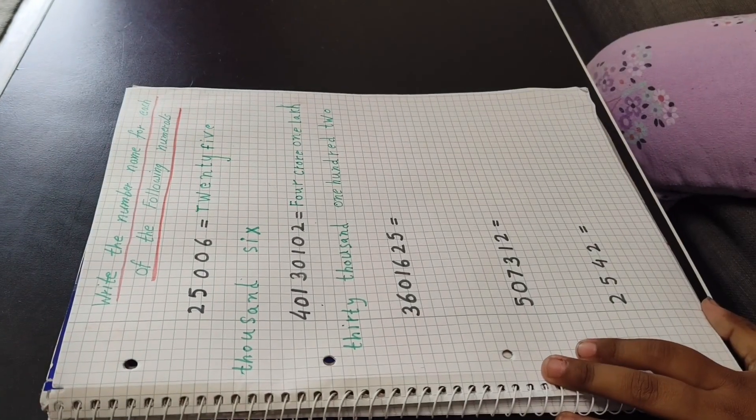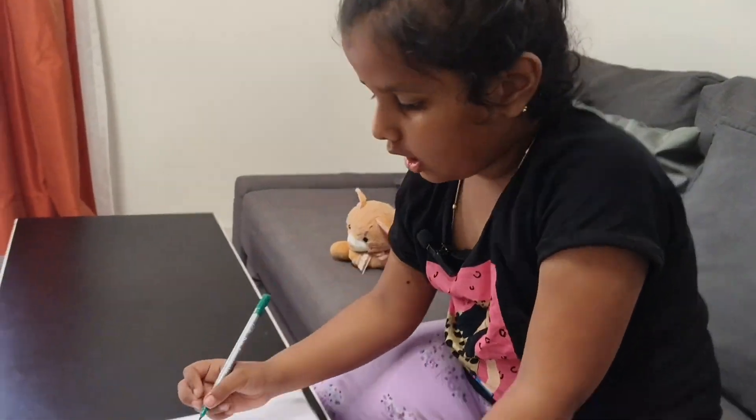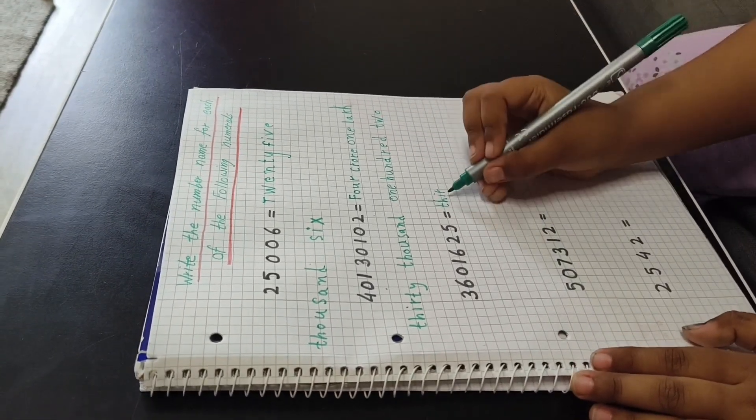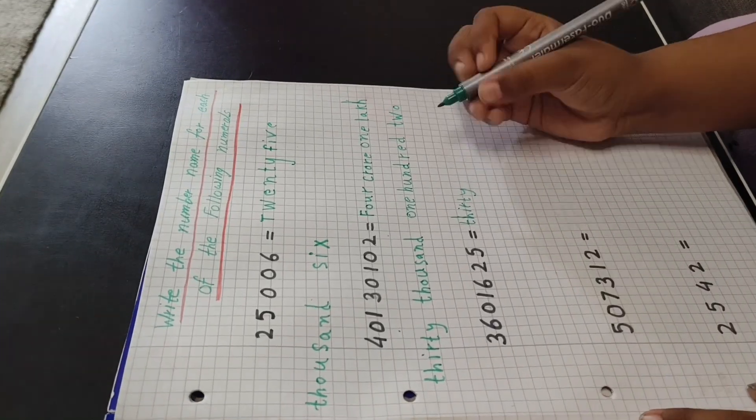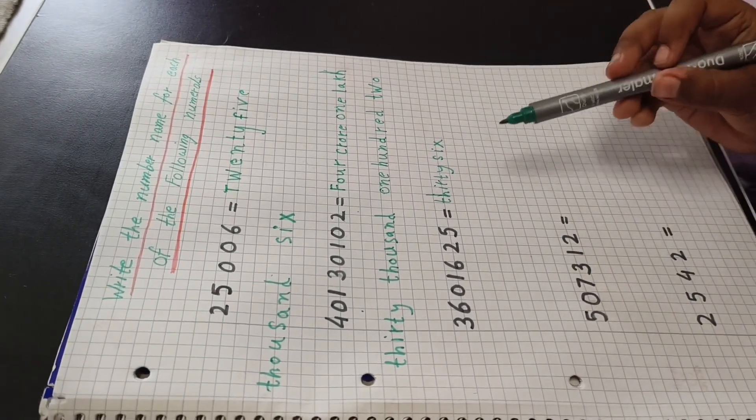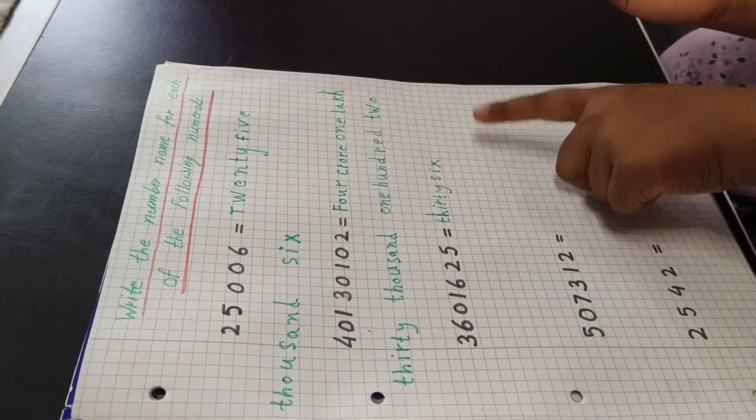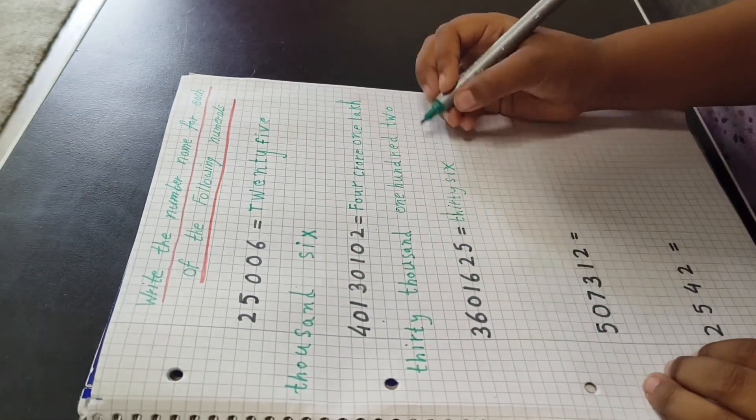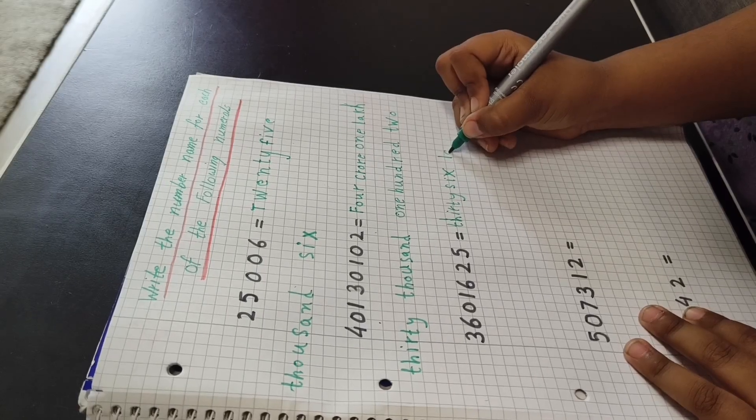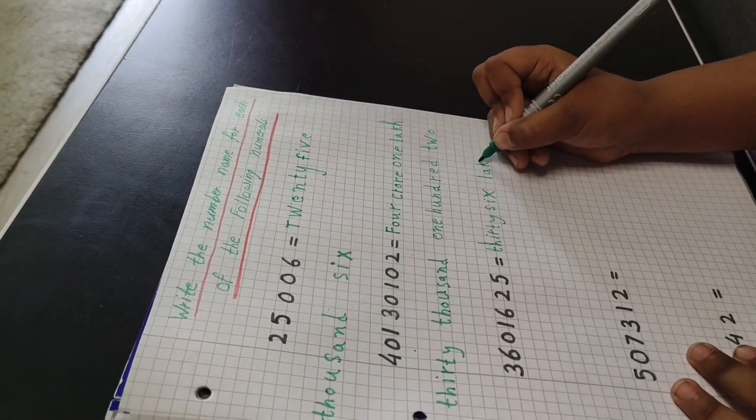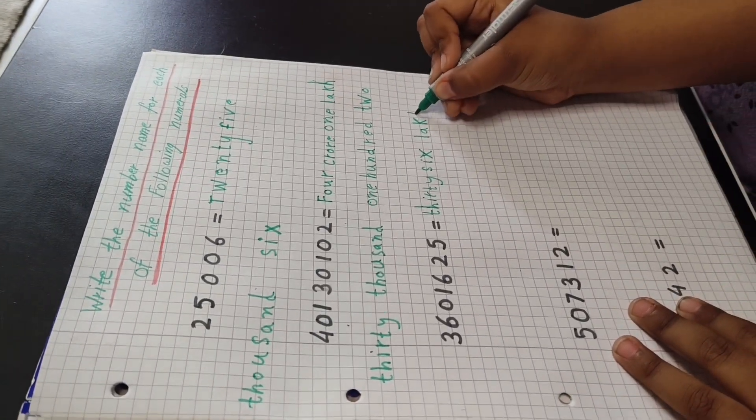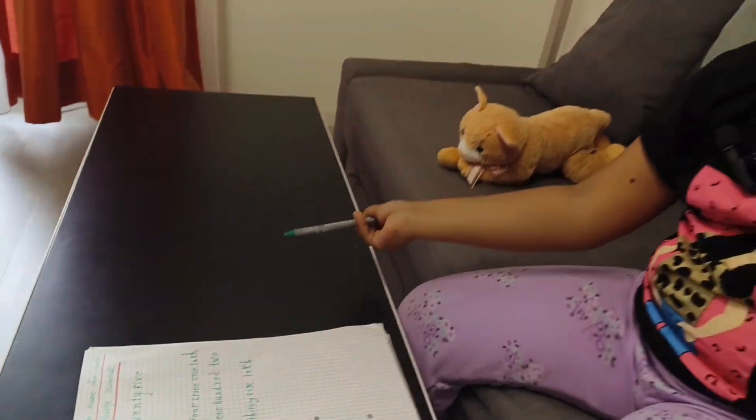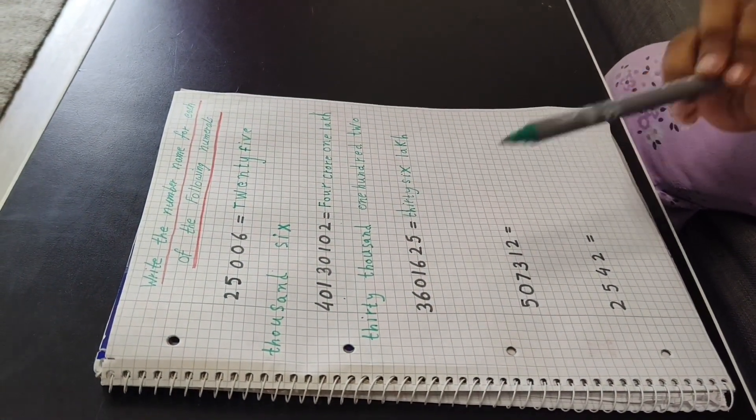Okay, how we count: ones, tens, hundreds, thousands, ten thousands, lakhs. This can be 36 lakh, okay. T-H-I-R-T-Y, S-I-X, 36, L-A-K-H.